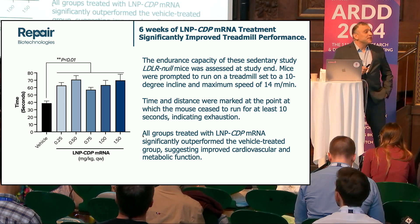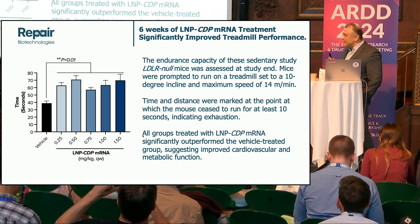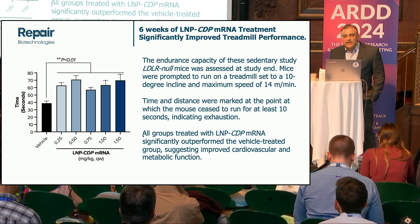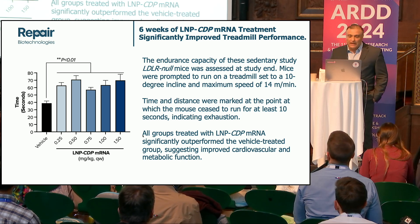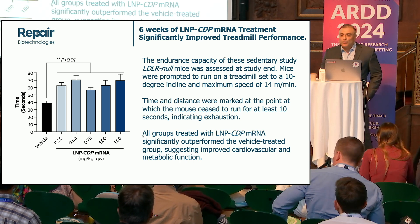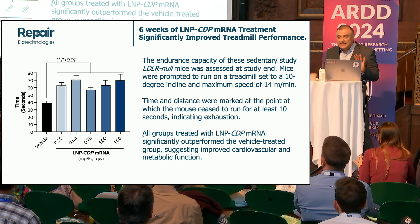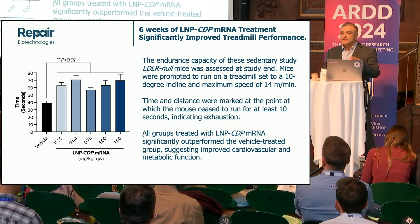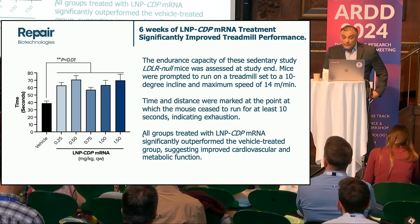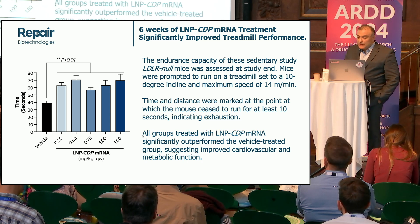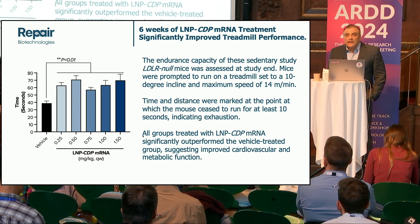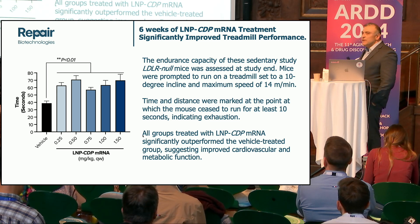We also put these mice on a treadmill at the end of the study — on an incline of 10 degrees with a maximum speed of 14 meters per minute. Time and distance were marked at the point at which the mice ceased to run for at least 10 seconds, indicative of exhaustion. These mice are very fat and sedentary — they don't want to run. But the treated LNP-CDP mRNA group outperformed the vehicle group at all doses. This suggests that our therapy likely improves cardiovascular function and potentially metabolic function.